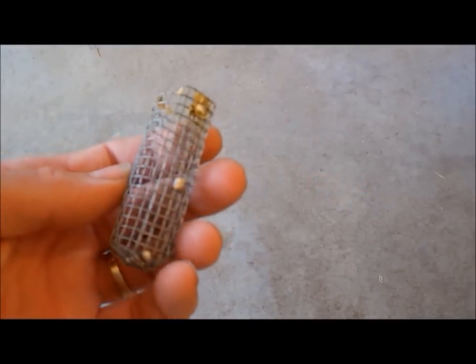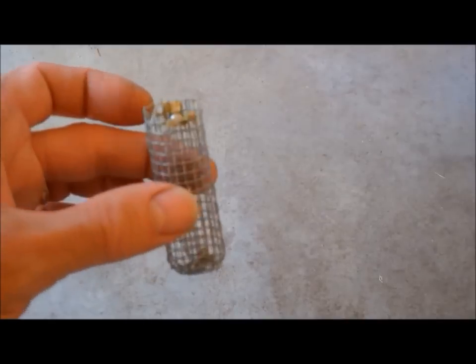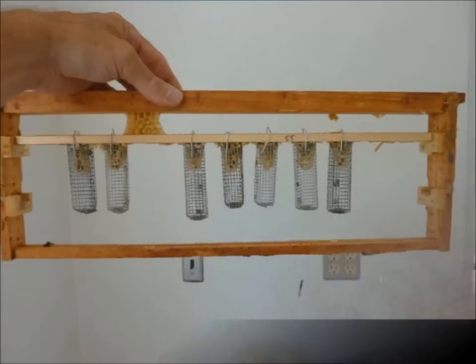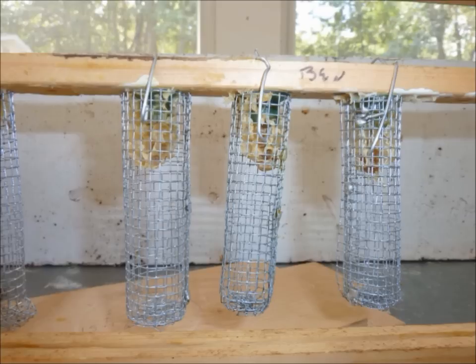The queen cell protector cage is a simple tubular gadget made out of number 8 hardware cloth. The cage is about the size and shape of a hair curler. The cage is used on a grafting bar to protect the developing queens. Safely enclosed in the cage, the new queens will be easy to find. More importantly, the queens will be protected by the cages from the first queen out, whose job one is to go around and kill any potential rivals.